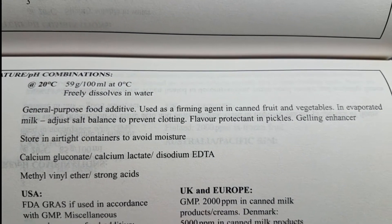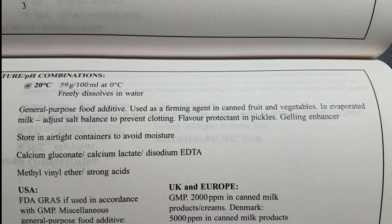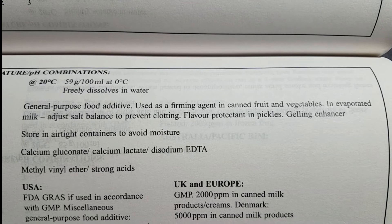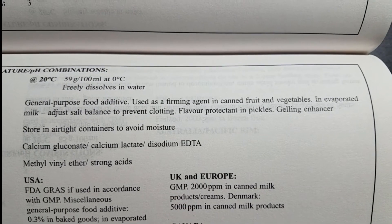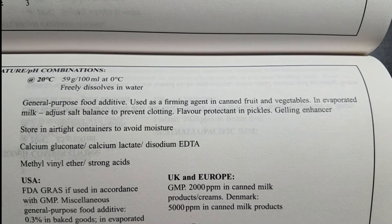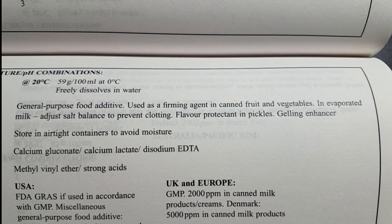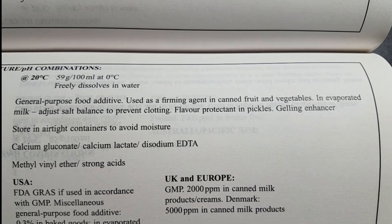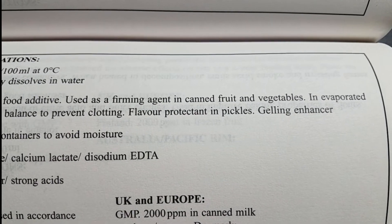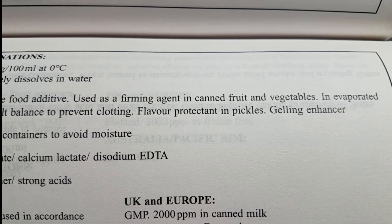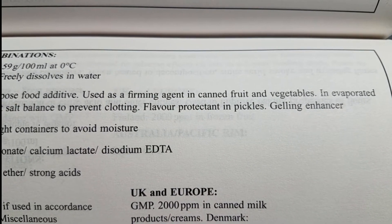And it is a general purpose food additive used as a firming agent in canned fruit and vegetables, in evaporated milk to adjust salt balance to prevent clotting and a flavor protectant in pickles, and a gelling enhancer. So I'm going to talk about this firming agent in canned fruit and vegetables and that gelling enhancer. And to understand that, we need to understand a plant fiber called pectin.